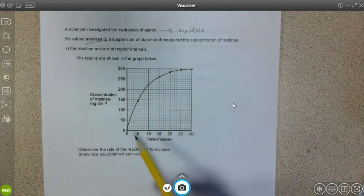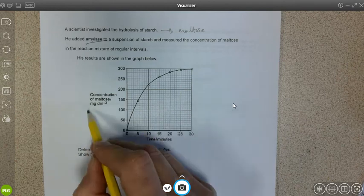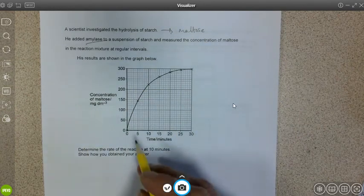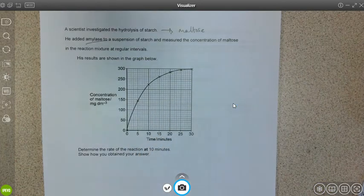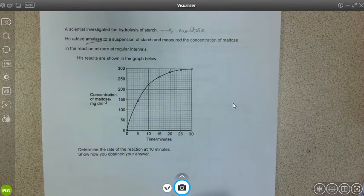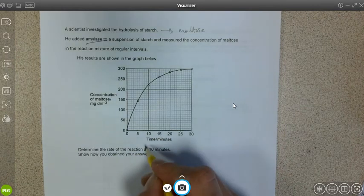He recorded the concentration of the maltose produced at regular time intervals and then this curve was plotted afterwards. In the question it says to determine the rate of the reaction at 10 minutes.